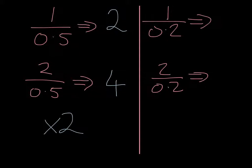Also, when we've got 1 divided by 0.2, then how many 0.2s go into 1? Well, 0.2s into 1, that's 5.